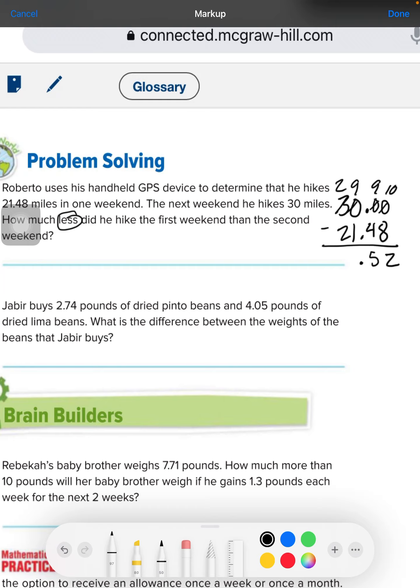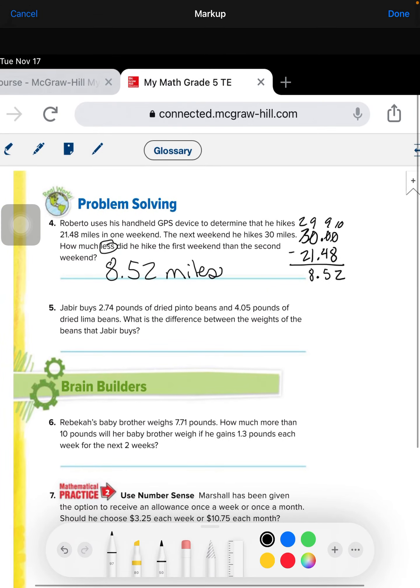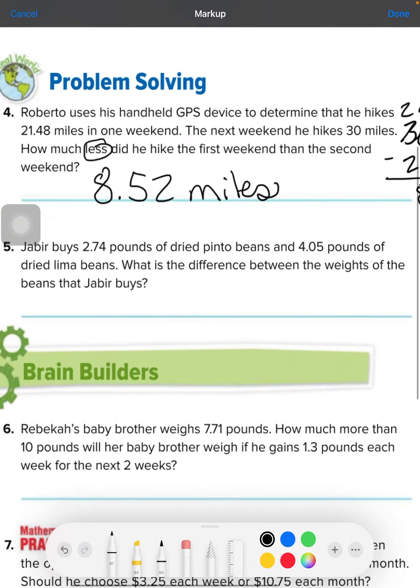Dot, dot, dot. Splat. 9 minus 1 is 8. And 2 minus 2 is 0. So, I'm not going to put that there and just say that he hiked 8.52 miles more this second weekend.